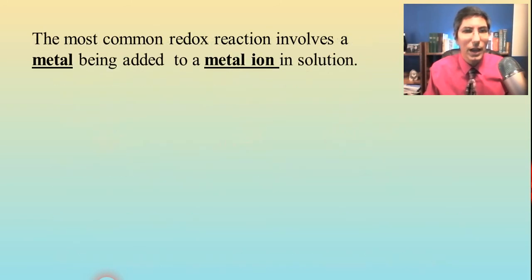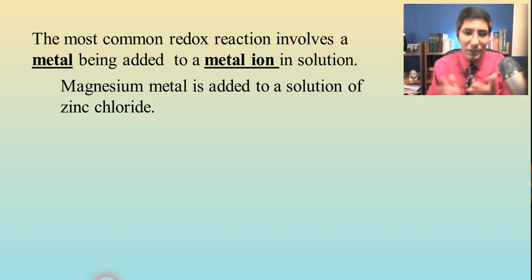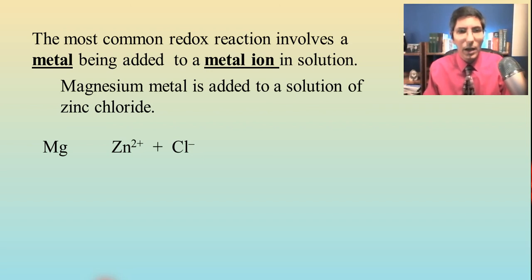So let's take a look at an example here. Like I said, the most common redox reactions involve a metal added to a metal ion. So here's an example of that. Magnesium metal is added to a solution of zinc chloride. Well, magnesium metal is just Mg, isn't it? And then zinc chloride would be a mixture of Zn 2+ and Cl negative.